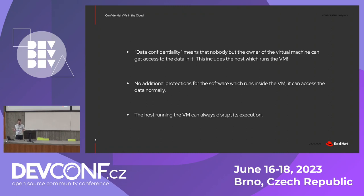However, all these confidential VM technologies give you no additional protections from within the VM. If you have some application running in your VM and that application is compromised, it will still allow for data leakages. Confidential VM technology protects your VM from the outside, from the running host — but it doesn't protect processes inside the VM. Also, none of the confidential VM technologies give you any guarantee that your VM will actually run. If the host is compromised, somebody can easily disrupt execution of your VM, terminate it, or just not allocate any time slots for it. So it only protects your data — it doesn't allow data to leak to the host, but nothing else.